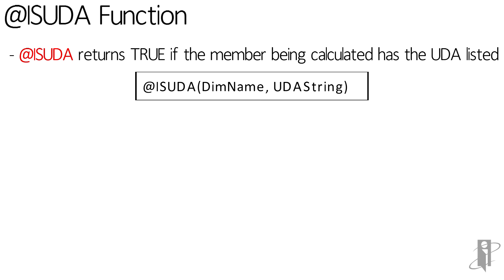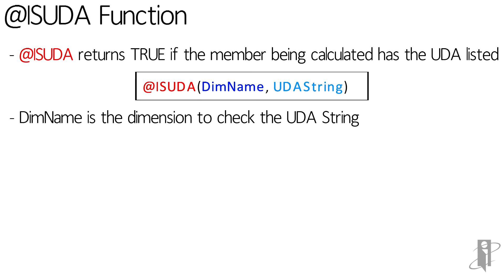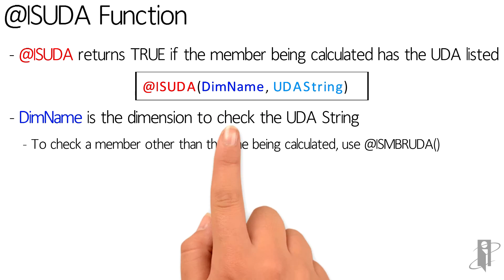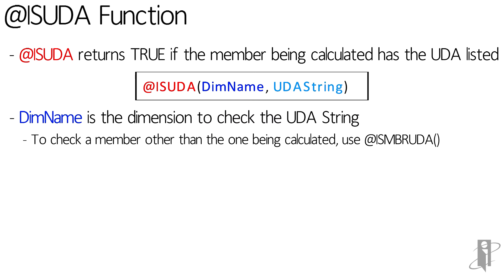The syntax is @ISUDA, followed by the dimension you want to check the member being calculated on, and then the string you want to check that member for. Now you can't specify what member you want to check using this function. If you want to check a specific member, you instead use the isMemberUDA function.